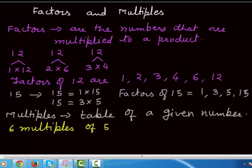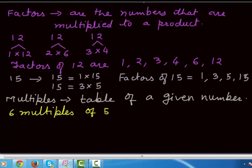5 times 1 is 5, 5 times 2 is 10, 5 times 3 is 15, 5 times 4 is 20, 5 times 5 is 25, and 5 times 6 is 30. So these are the multiples of 5. We will consider another example.